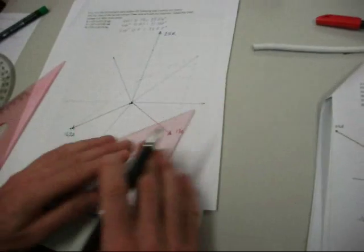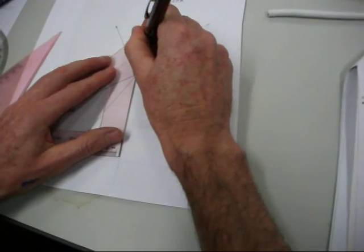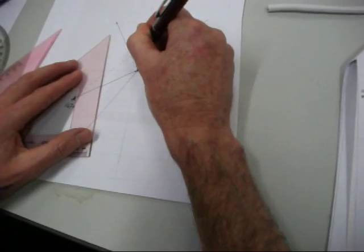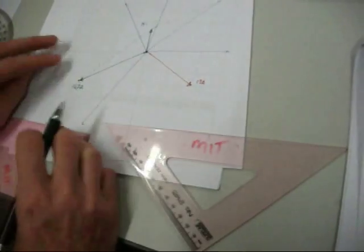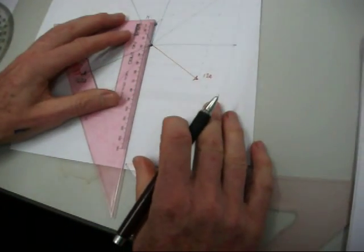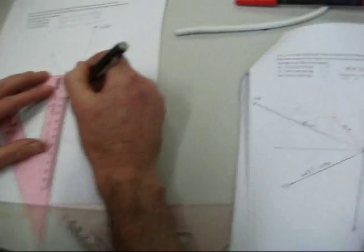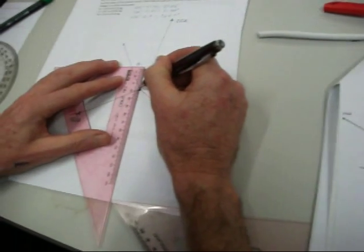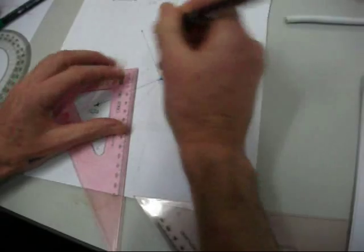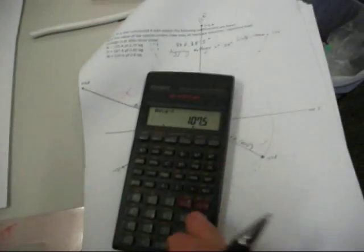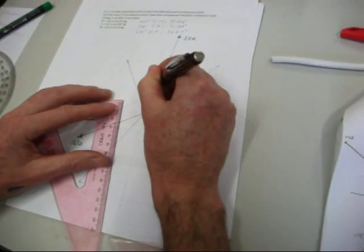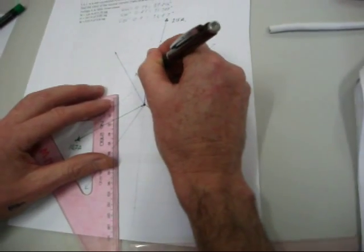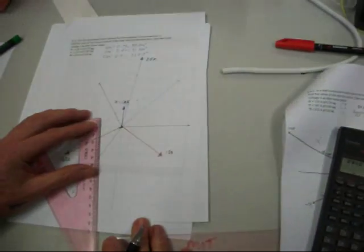Where the two meet is a neutral current. It measures 25, 26, 27, 28, 29. 29 times 2 because we're using a half scale, 58. So 58 amps neutral current, that's the answer.